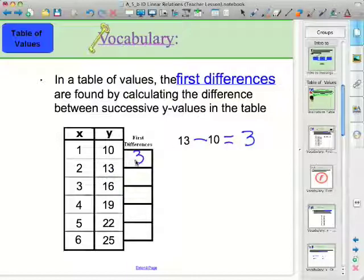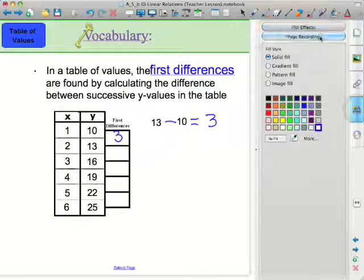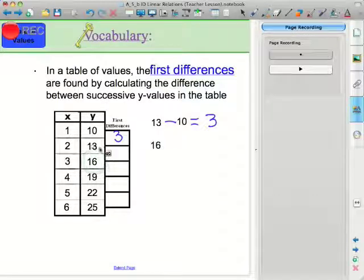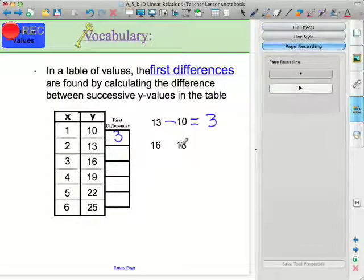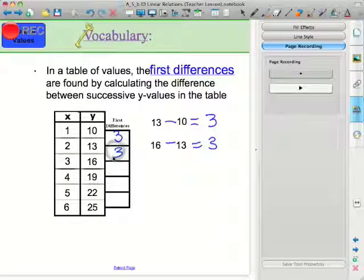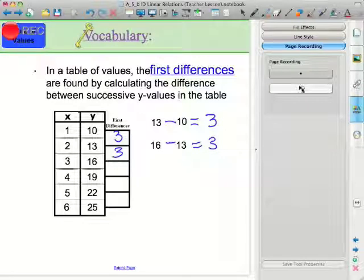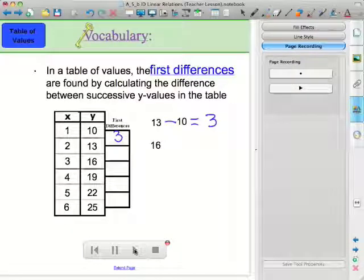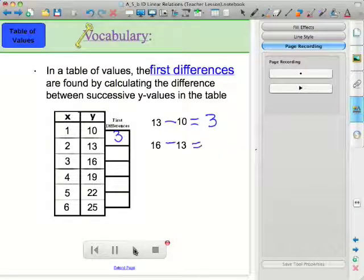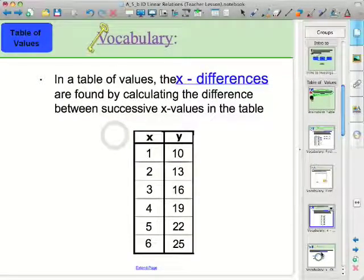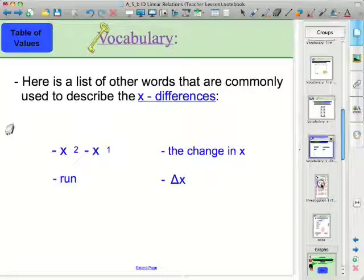Now, what you might want to do, and what I usually do, is I'll make use of my page recording feature. So, I'm going to record myself going through an example of calculating the first difference, and the reason why I do this is because later on I'm going to have students calculate first differences themselves. And there we go, and instead of having to go through multiple examples, students can then use this playback feature to see how I calculated those first differences. I'll do the same to calculate the x differences on this Table of Values, and now I'll actually start my investigation.